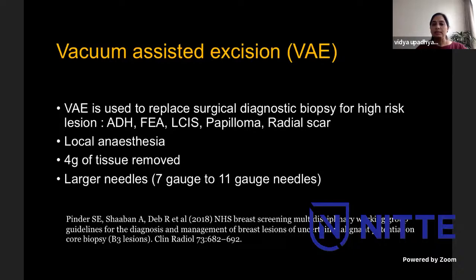Vacuum assisted excision (VAE) is now used to replace surgical diagnostic biopsy for high-risk lesions under newer guidelines. Once we do a biopsy and get a high-risk lesion result, we go in again with a bigger needle to remove it entirely, saving the patient a surgery. It is done under local anesthesia with larger needles to obtain more tissue. We don't do it in our institution yet, but it is becoming very popular.